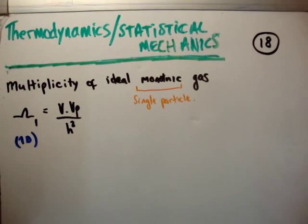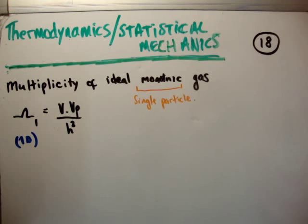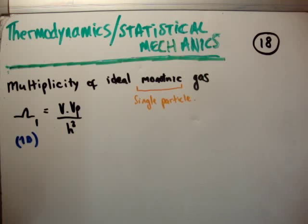In this video I'm going to continue on with my tutorial videos on thermodynamics and statistical mechanics. This is video 18, and I'm going to discuss the multiplicity of an ideal monatomic gas, where monatomic means a single particle.